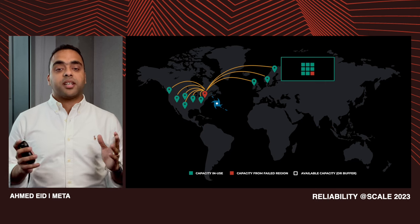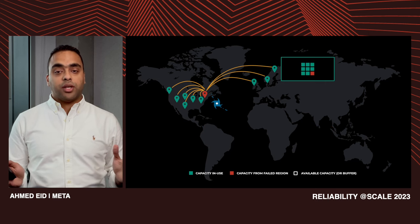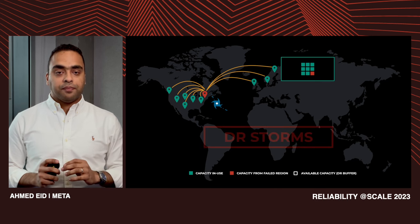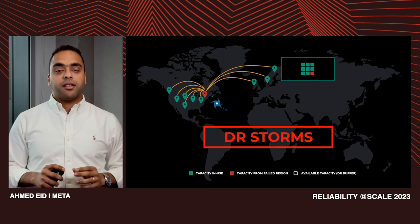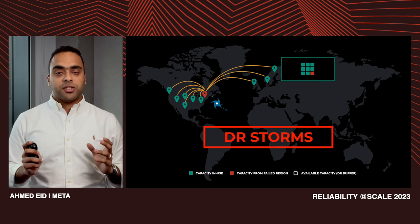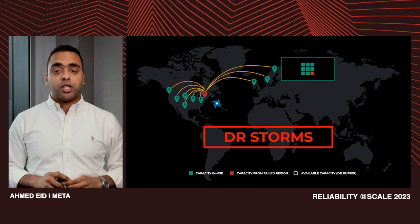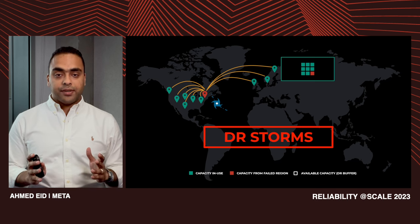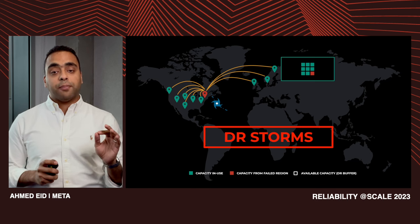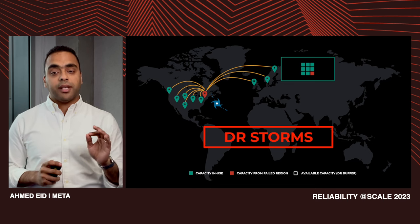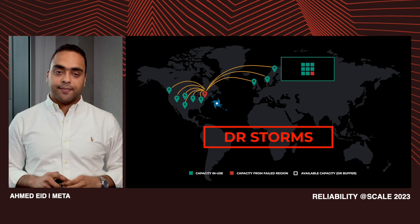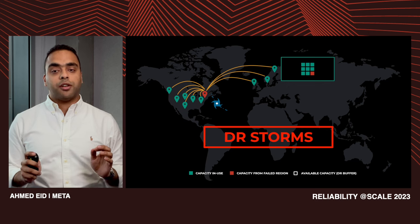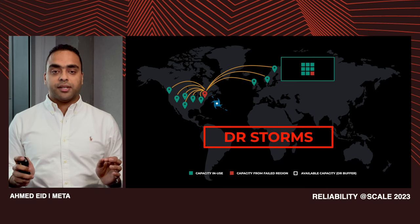With this as the current state, all healthy regions are running and consuming our DR buffer. DR storms are disaster readiness exercises where we isolate a production region to validate end-to-end readiness for single-region failures — all of this happens in the production environment while being transparent to users. We have been running zero-notice single-region DR storms in production for the last few years.